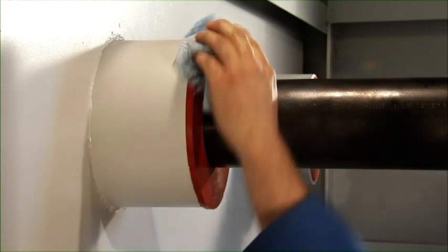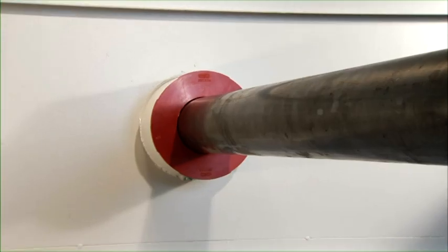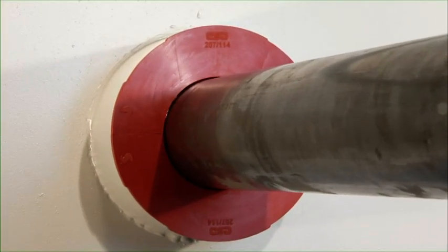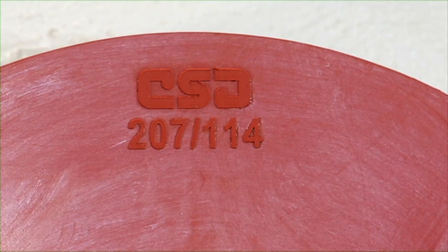To ensure optimum tightness, the proper selection of the plug has to be based on the inner diameter of the conduit sleeve and the outer diameter of the ducted pipe. The plug size is visible on the flange of the plug.